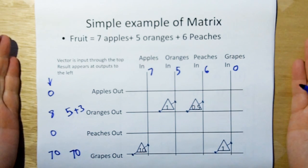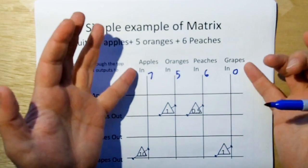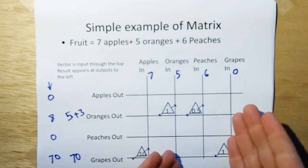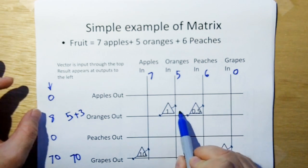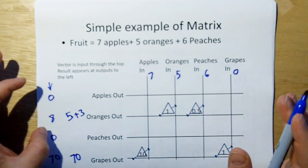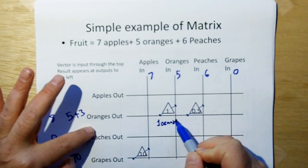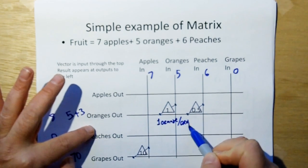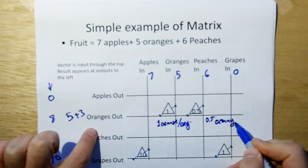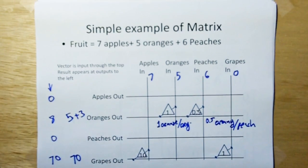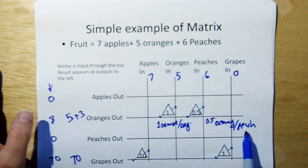That's the way you can look at what a matrix is and what it does. A matrix processes vectors. Vectors have units, and those units are transferred to the output of the matrix.